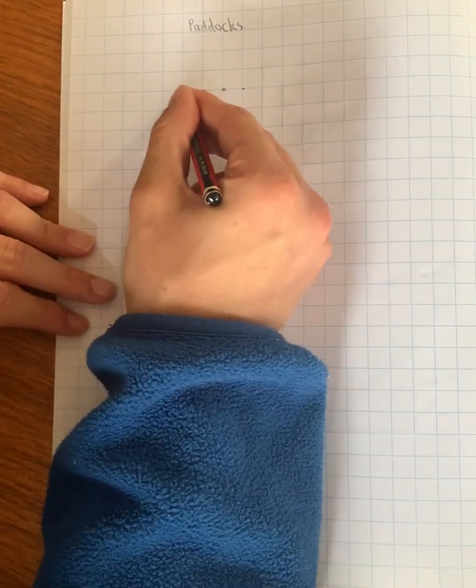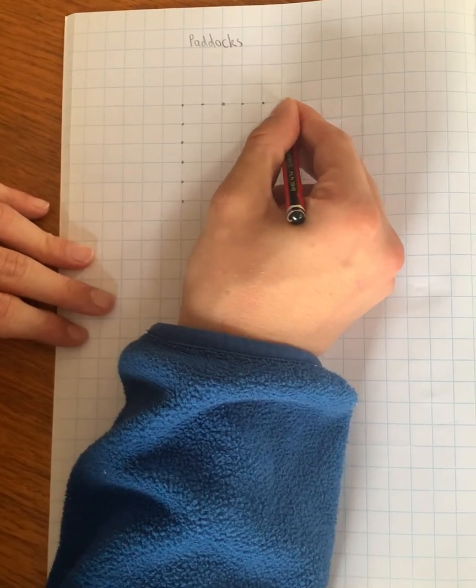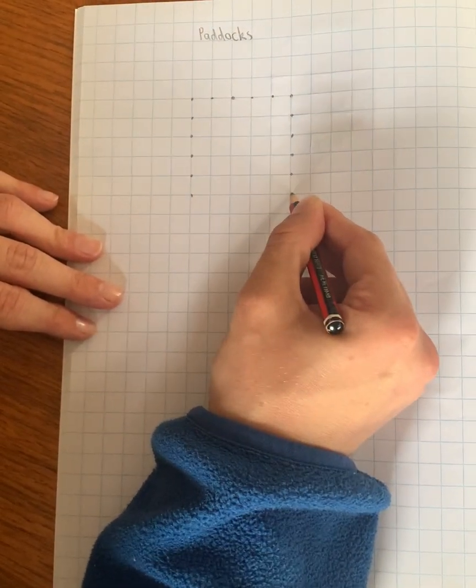And then you go six across as well. One, two, three, four, five, and six. And then you're going to fill in all the other corners.